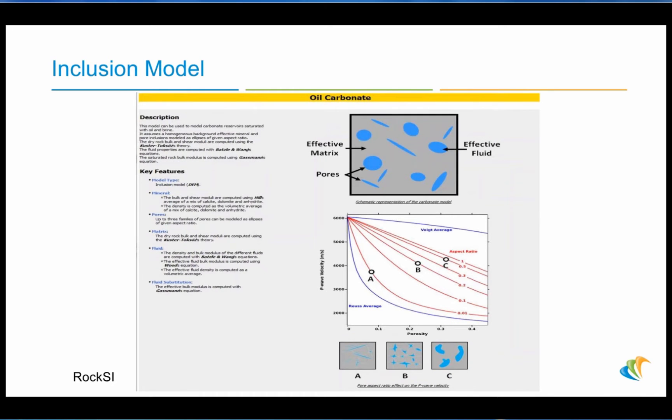In the example for the inclusion model from the help file, we also see description and key features. We see another cross-plot of porosity and P-wave velocity. But in this plot, an important parameter for this type of model is the aspect ratio. That's the height versus the width of the pore space, that ratio. You can see these various ratios for those very much like pancakes or needles in point A and in B and in C. So you see the lines for various aspect ratios between the Reuss and the Voigt bounds.